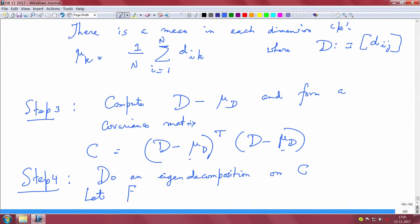Step 4: do an eigendecomposition on C. In your Matlab form, let V and Λ be the eigendecomposition of the covariance matrix. These are your eigenvalues and these are your eigenvectors.